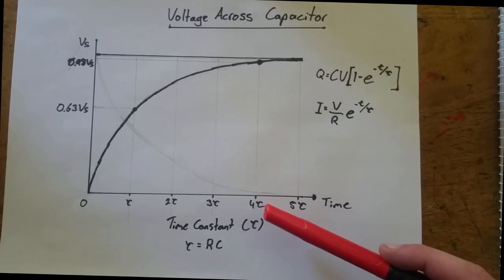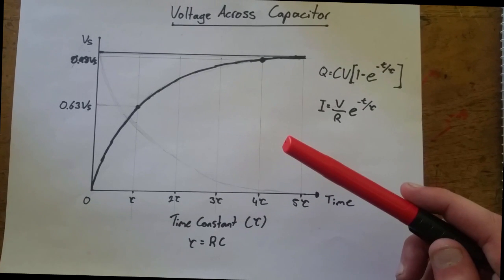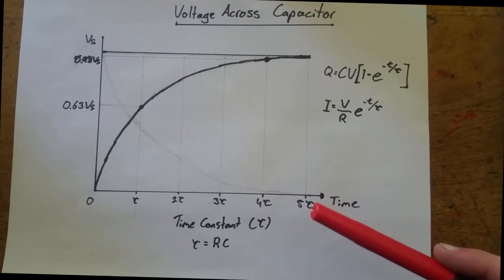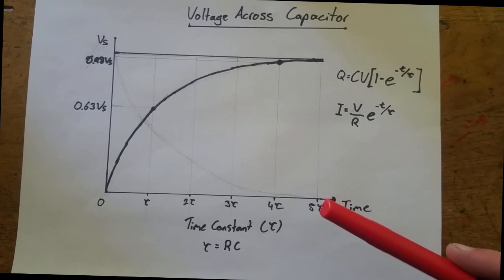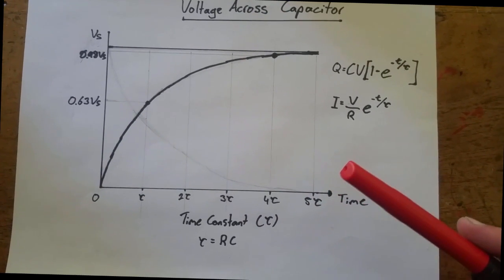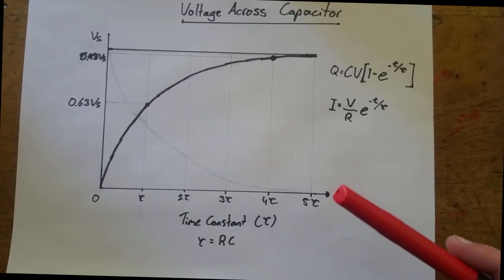After four time constants, this goes to about 98%, and after five, the circuit can be said to be at steady state. At this time, the capacitor can't resist acting like an open circuit.